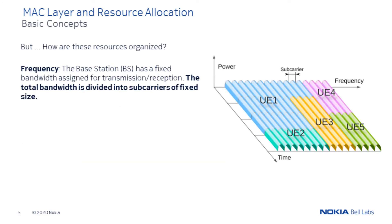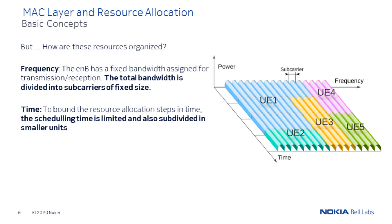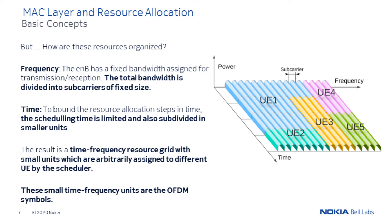But what are these resources? How are they organized? These resources are divided in the frequency and time domain. In the frequency domain, the base station has a fixed bandwidth assigned for transmission and reception. This bandwidth is divided into sub-carriers of fixed size. To bound the resource allocation steps in time, the total scheduling time is limited and subdivided into smaller units. These time and frequency divisions build the so-called resource grid, in which these smaller units are arbitrarily assigned by the scheduler to different UEs. These small time-frequency units are the OFDM symbols.